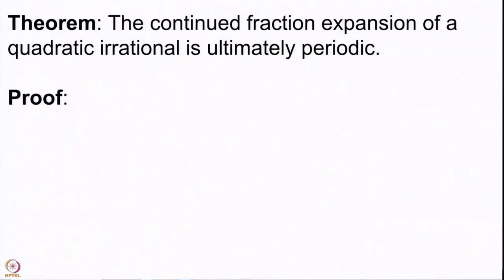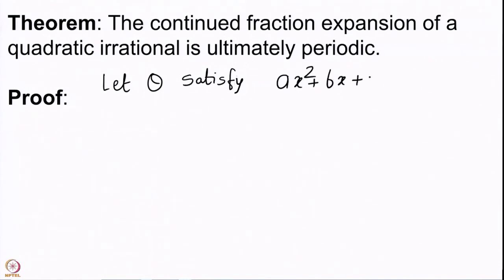Now we want to prove the other direction: if you start with any quadratic irrational it should have a continued fraction expansion which is ultimately periodic. Suppose we start with a number θ satisfying ax² + bx + c = 0, with a, b, c integers, b² − 4ac positive and not a perfect square. Those are our usual conditions for a quadratic irrational. This proof is very interesting because we are going to use results from binary quadratic forms.